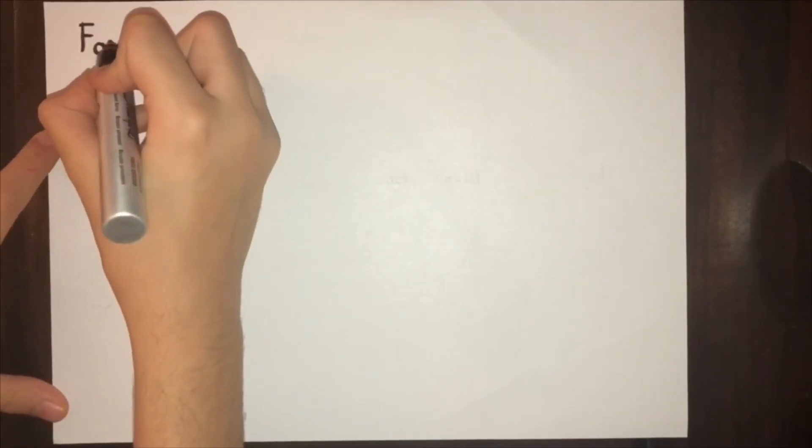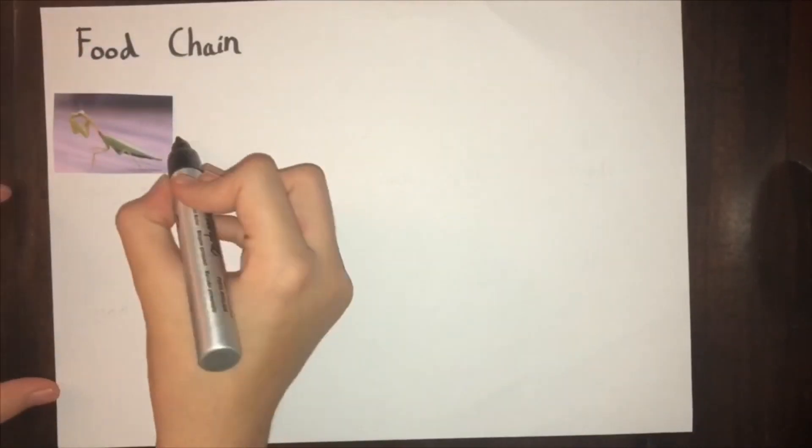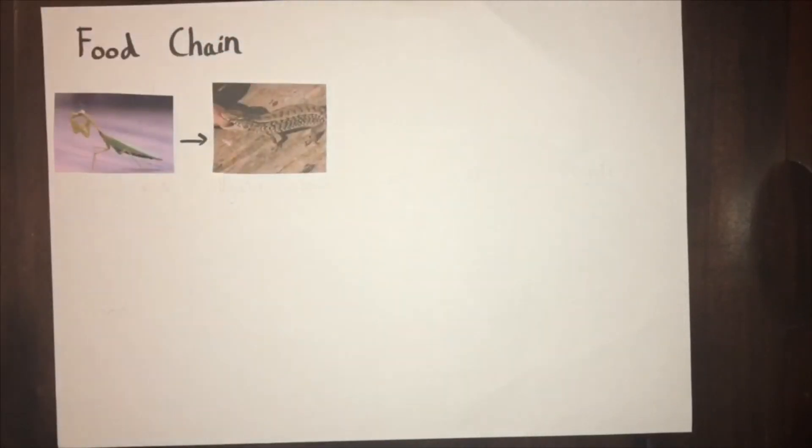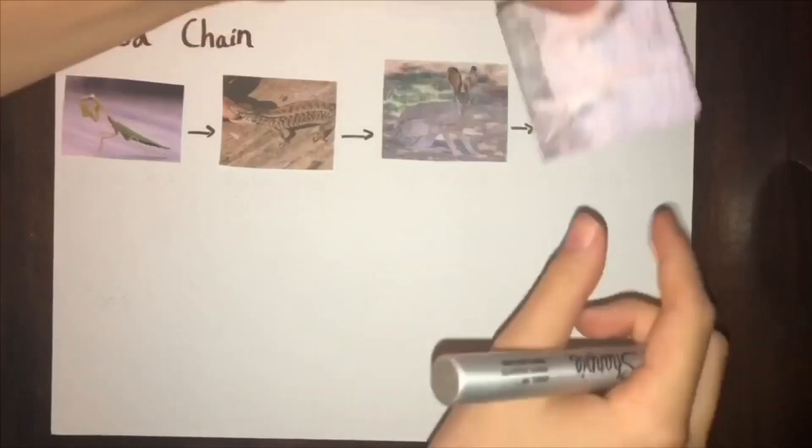A food chain is a diagram that shows what an organism eats. Here, the praying mantis eats the grass, and the mantis is eaten by the alligator lizard, which is eaten by the jackrabbit, which is eaten by the coyote.